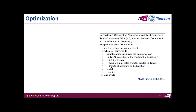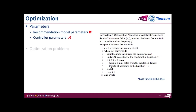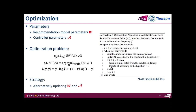This is the optimization algorithm of AutoField. There are two sets of parameters to be optimized: the deep recommendation model parameters w and the controller parameters a. Following DARTS, we formulate a bi-level optimization problem and alternatively update w and a. Specifically, we update w on the training set while fixing a, and update a on the validation set with w fixed. This optimization strategy avoids the overfitting problem. The loss function used is binary cross-entropy loss.